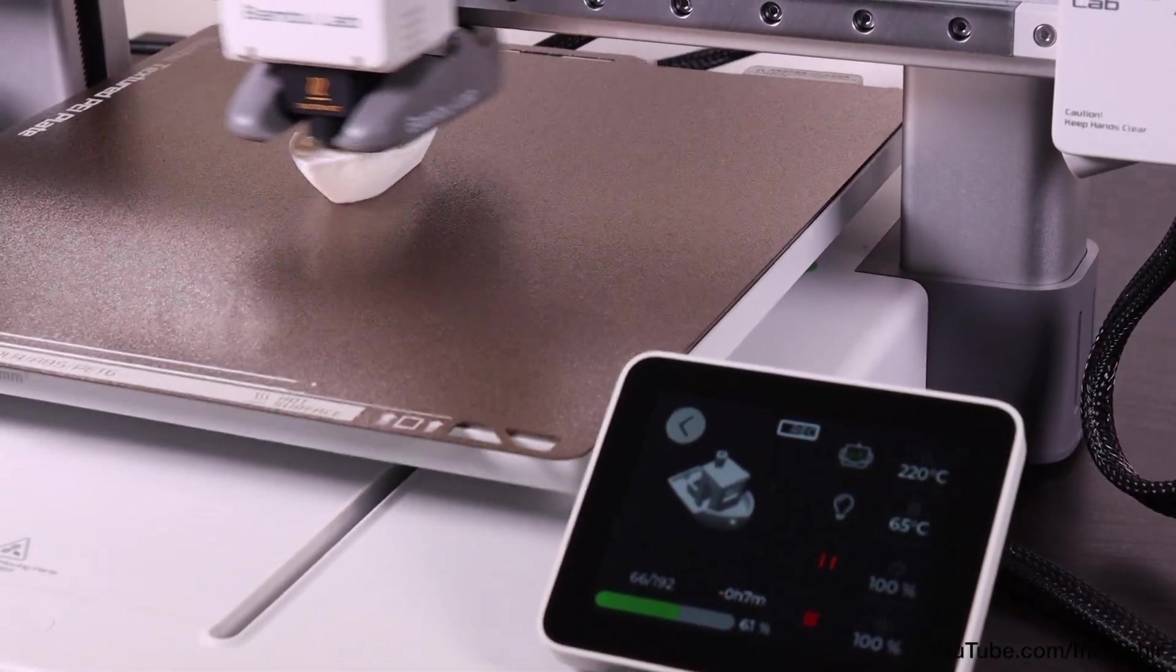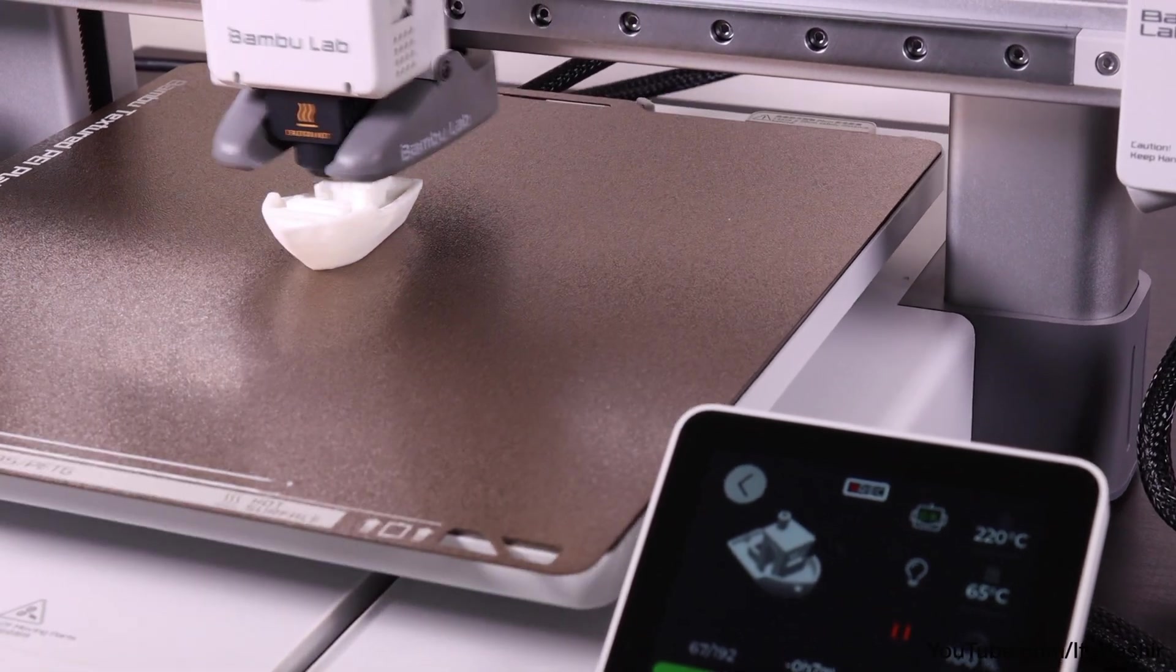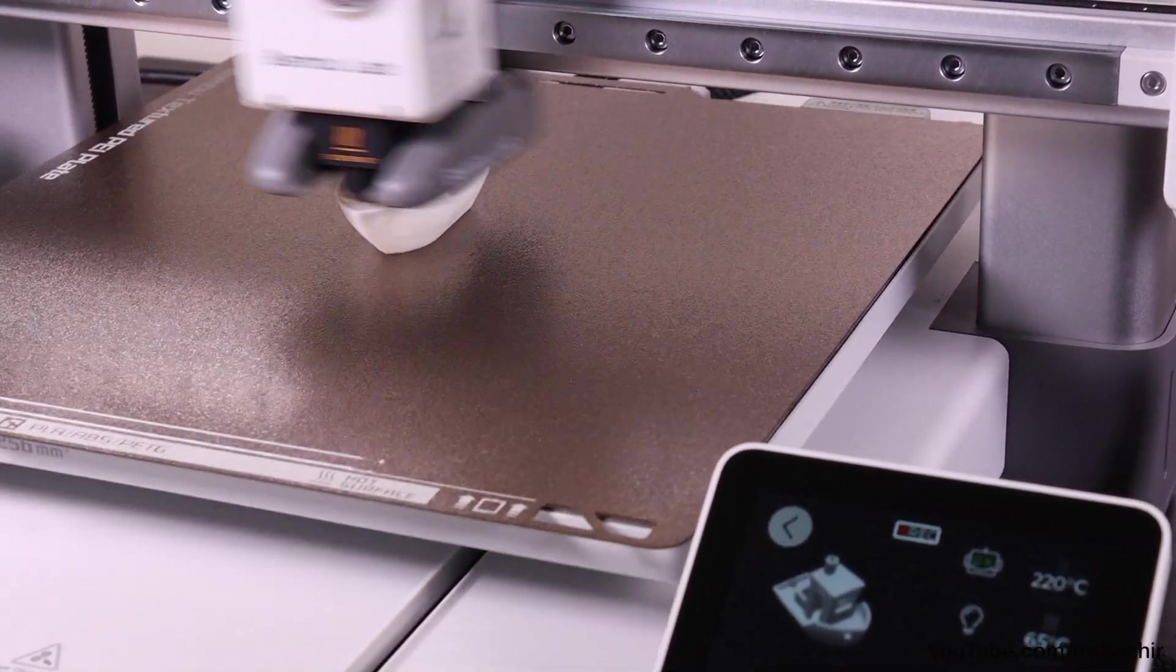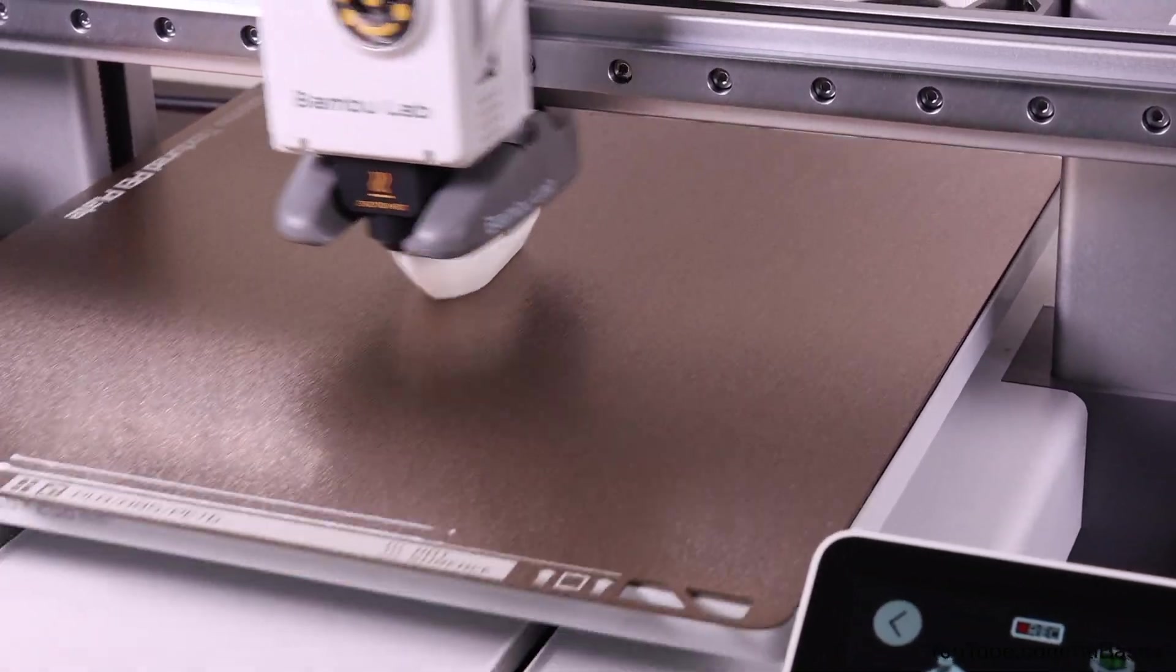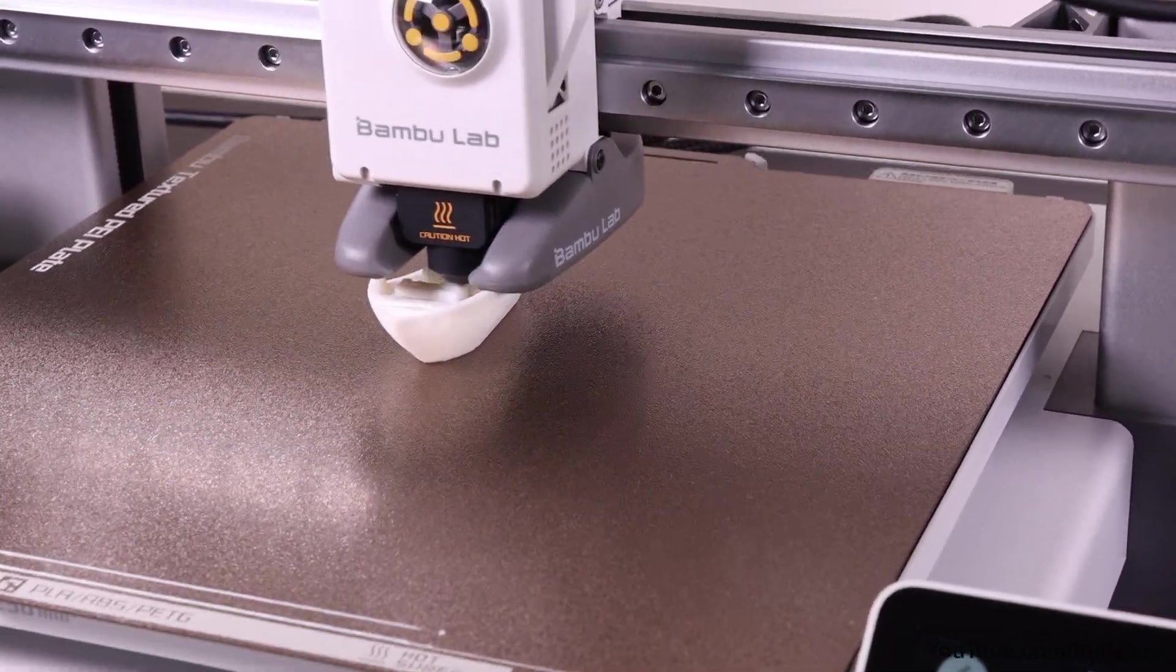The print volume is 256mm squared which is generous with an official print speed of 500mm per second. At no point can this printer actually print at that speed though. The fastest it can go without looking terrible is around 300mm per second which is still faster than a lot of the competition.